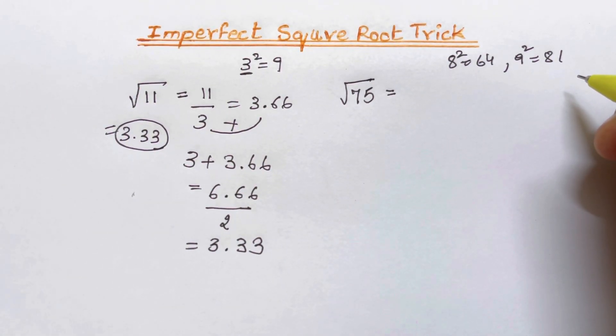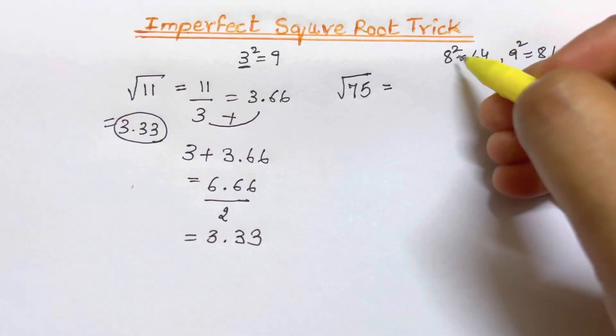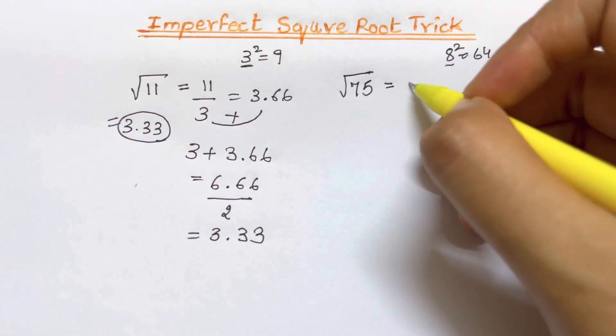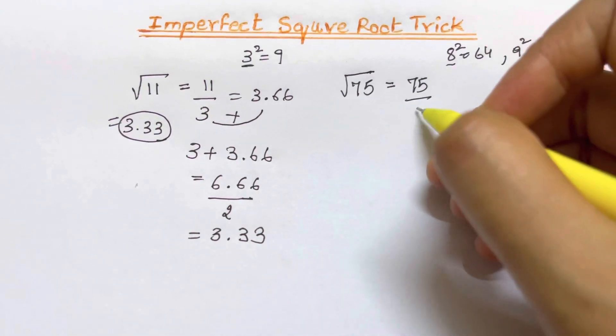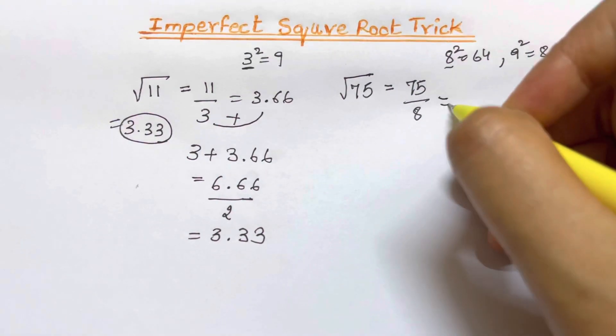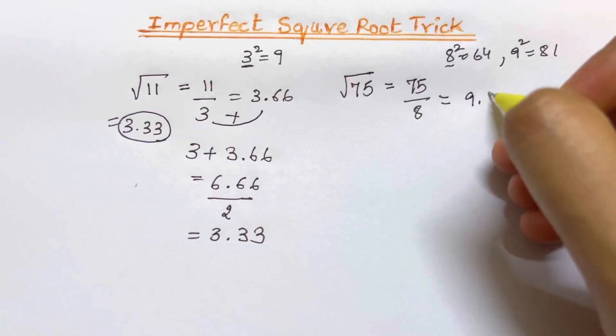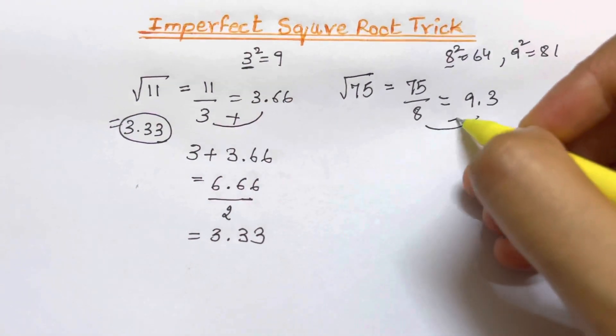So all we are going to do is choose any of the number. So we are going to choose 8. Write down the number 75 divided by 8 and 75 divided by 8 is just 9.3. Now we are going to add these two numbers.